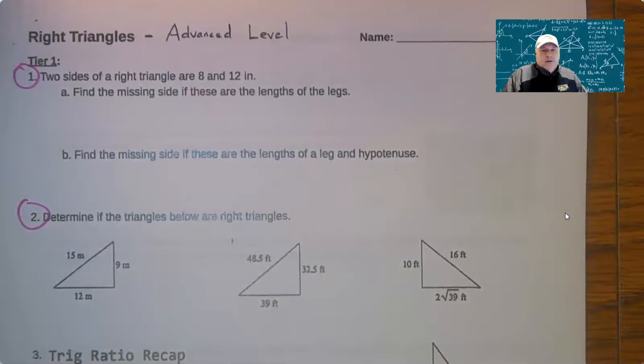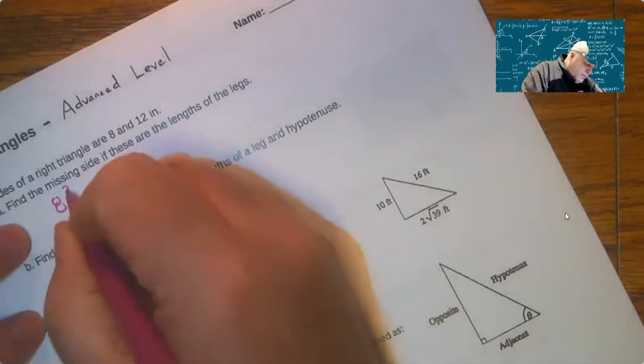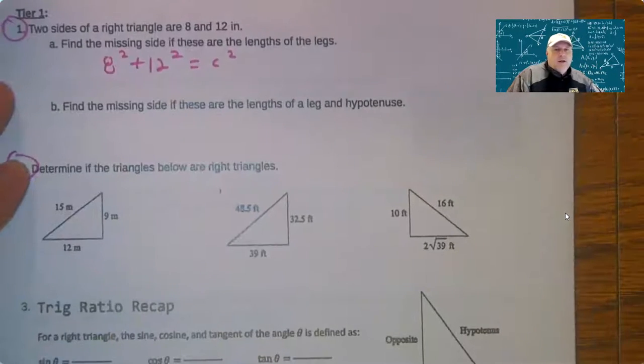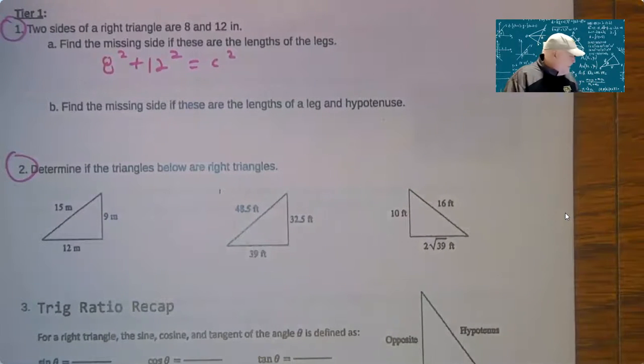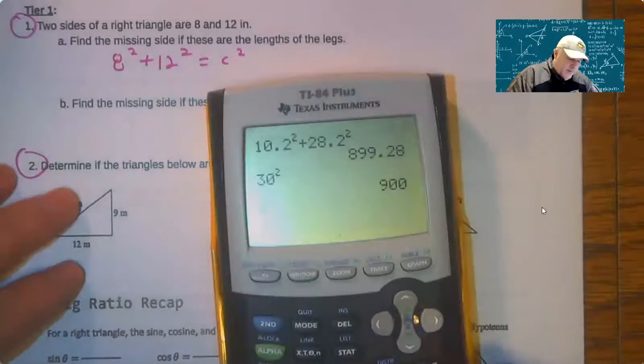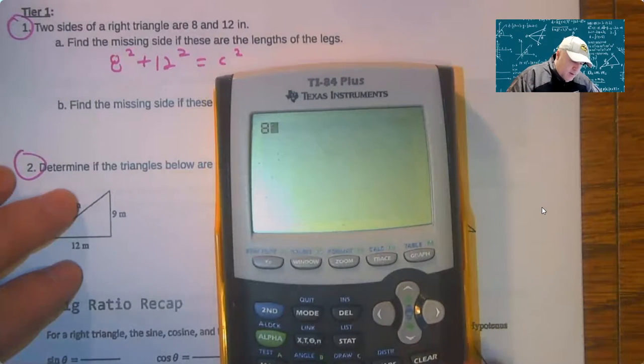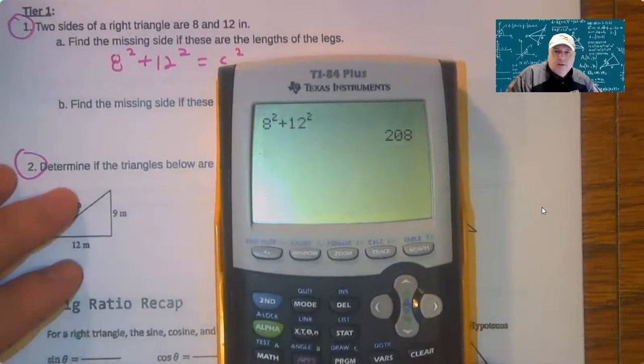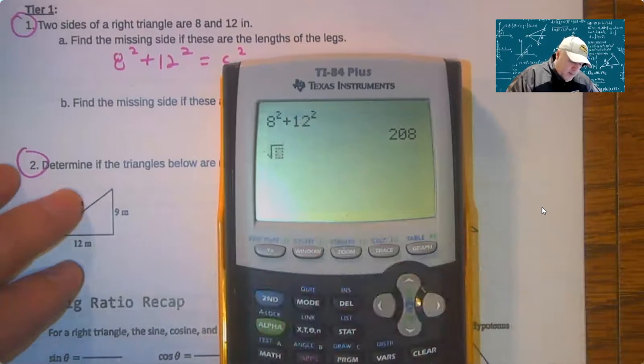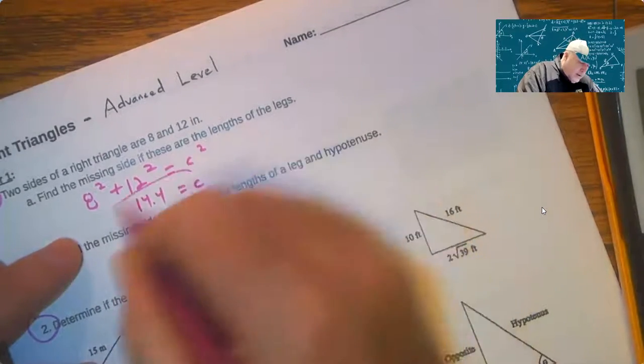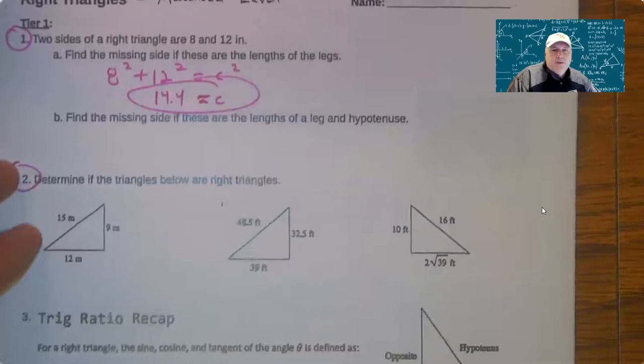So the legs make the right angle. I always say trace the right angle. So you're doing 8 squared plus 12 squared equals your hypotenuse squared. We'll call it C. And then you want to solve that out. So you're going to add the sum of those two legs squared and then take the square root of that. I'm going to do that. 8 squared plus 12 squared, 208 and then take the square root of that value. A lot of times it will not be a nice whole number. So 14.4.